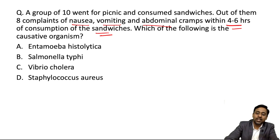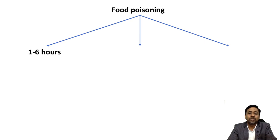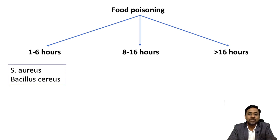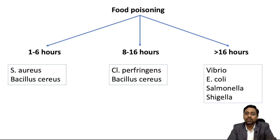Food poisoning is classified into three types depending upon duration of incubation. First: 1 to 6 hours — caused by Staph aureus and Bacillus cereus. Second: 8 to 16 hours — caused by Clostridium perfringens and Bacillus cereus. Third: more than 16 hours — caused by Vibrio species, E. coli, Salmonella, Shigella, and Campylobacter.